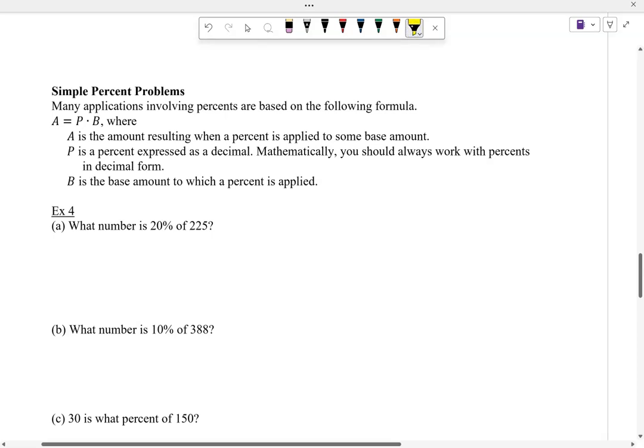Let's do some simple percent problems. These come from A, the amount, equals the percent times B, which is the base. I like to take the statement and convert it to an algebraic equation. What number - I'll let that be A. What number is - is means equals - 20%. Convert that to a decimal, 0.20. What number is 0.20 of - of means multiply - of 225. Now we solve for A, the amount. I punch in 0.2 times 225, and I get 45.